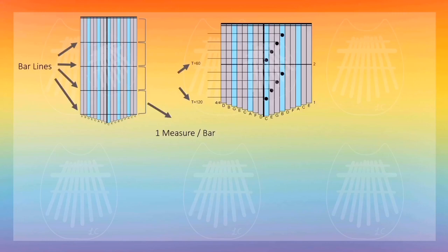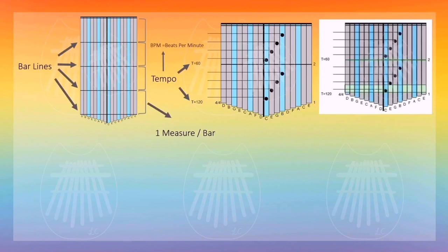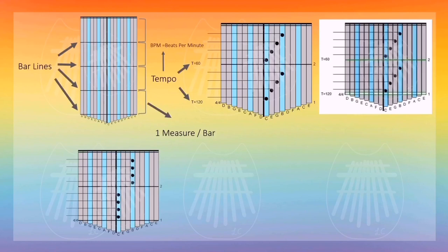When you see these numbers in kalimba tabs, they are called tempo. Tempo tells you how fast or slow a song would be. Tempo is measured in BPM, which is beats per minute. T equals 120 means there are 120 beats per minute, and T equals 60 means there are 60 beats per minute. You can hear that 120 is twice as fast as 60.